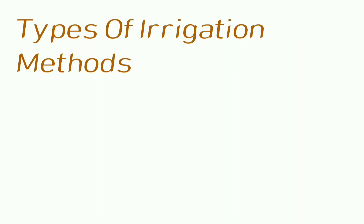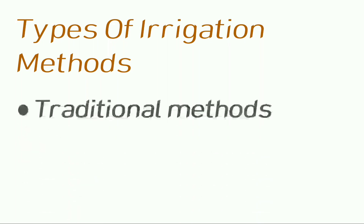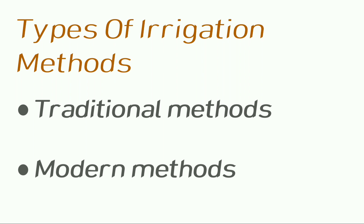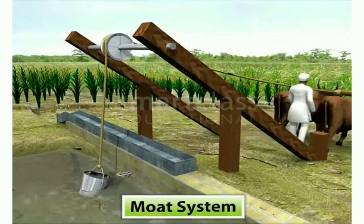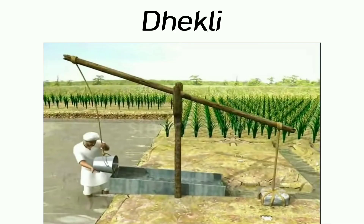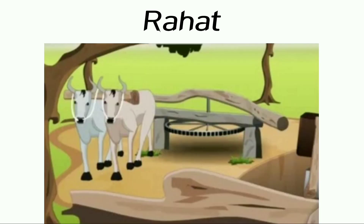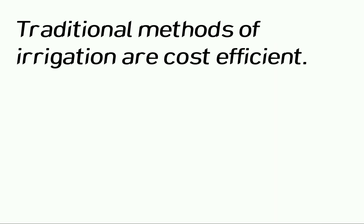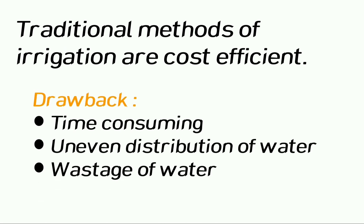There are two methods of irrigation: traditional methods and modern methods. Under traditional methods of irrigation, we have the moat or pulley system, chain pump system, dhakli, and rahat system or lever system. Even though traditional methods of irrigation are cost efficient, there are some drawbacks: they are time consuming, there is uneven distribution of water, and there is wastage of water.